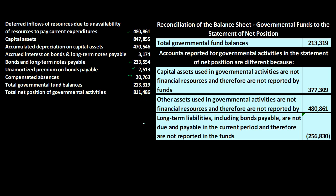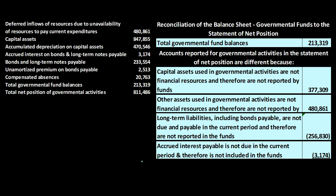Next: accrued interest payable is not due in the current period and therefore is not included in the funds. We're talking about accrued interest on the bonds — if it's not due in the current period, it's not a current item. Under the modified accrual basis, which typically only includes current items, it wouldn't be recorded there, while under the accrual basis it would be recorded as expected.